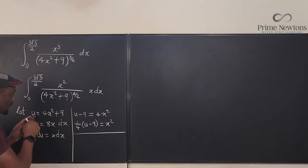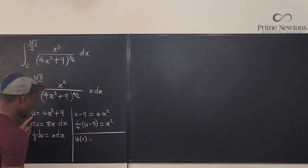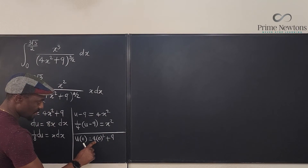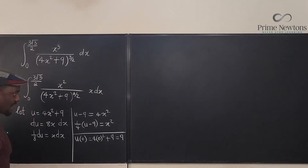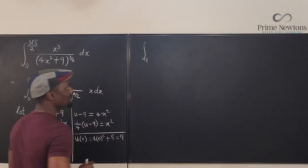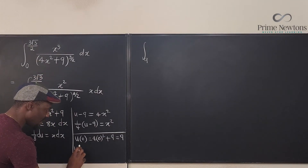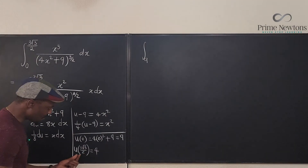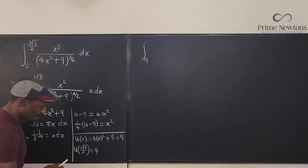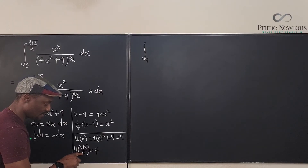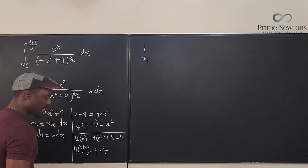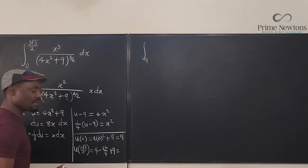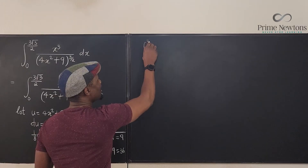What is u when x = 0? u = 4(0)² + 9 = 0 + 9 = 9. Now for the upper limit, u evaluated at x = 3√3/2: we square 3√3/2 — squaring gives (9·3)/4 = 27/4 — then multiply by 4: 4 · (27/4) = 27. So u = 27 + 9 = 36. We have perfect squares sitting here — 9 and 36 — brilliant!